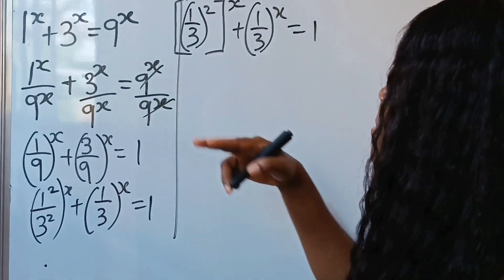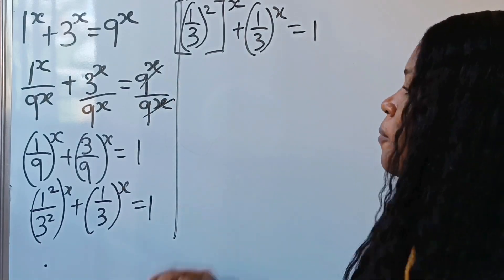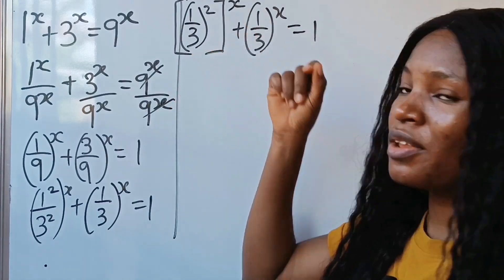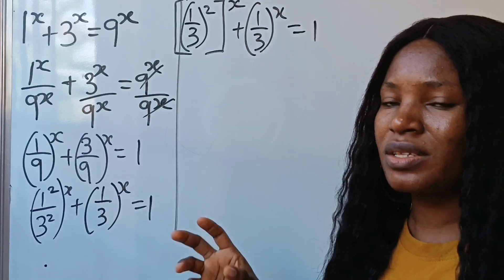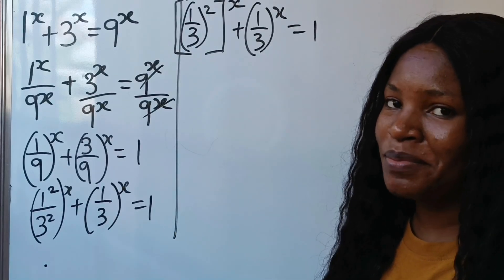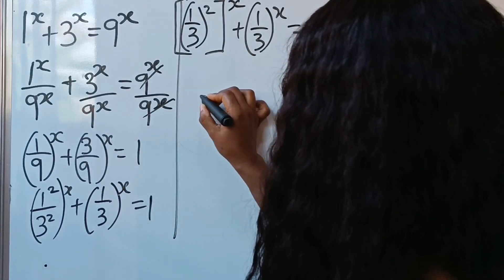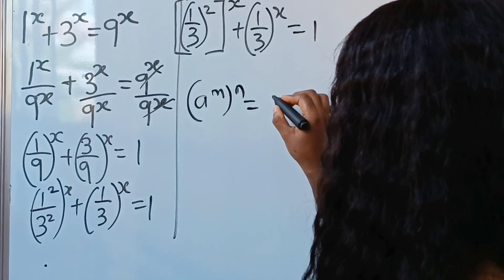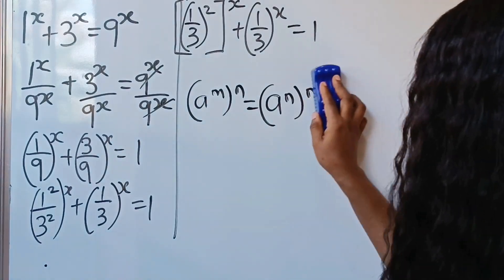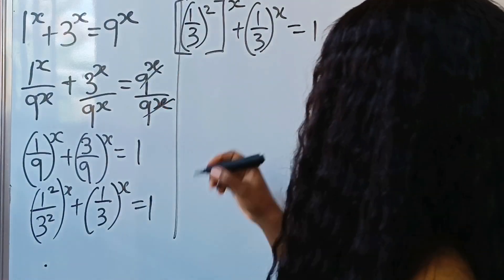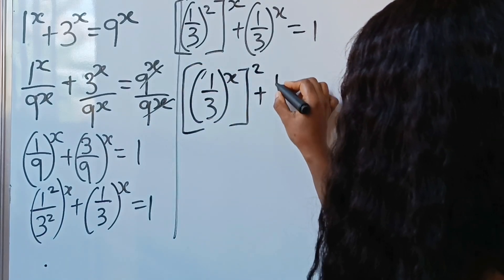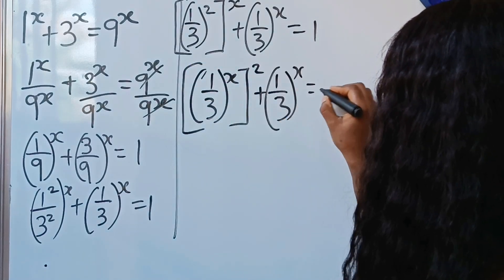Now don't jump ahead thinking you've found your quadratic equation just yet — we are still going to name this something, and you cannot use it to get the value of x directly. Just follow along and watch to the end. Recall that where you have a to the power of m, raised to the power of n, this equals a to the power of n raised to the power of m — the powers can be interchanged. That's exactly what I'm going to do for this first term.